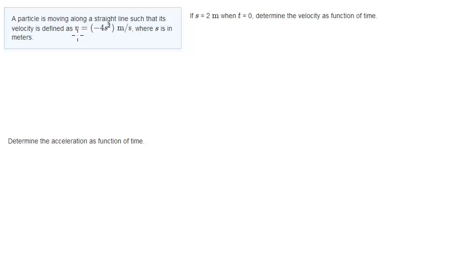its velocity is defined by this function which is v equals negative 4s squared, where v is the velocity and s is the position where s is in meters. So what they want you to do is determine the function for velocity with time and determine the acceleration as a function of time.